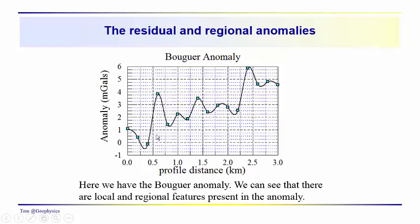You can see this is obviously a lot more complicated than the anomaly associated with a buried sphere. You've got lots going on here. There are a couple things that you should be able to see. One is that the anomaly, on average, tends to increase through the area, and then there are these shorter wavelength variations superimposed on top of this longer wavelength feature. There may be different sources.